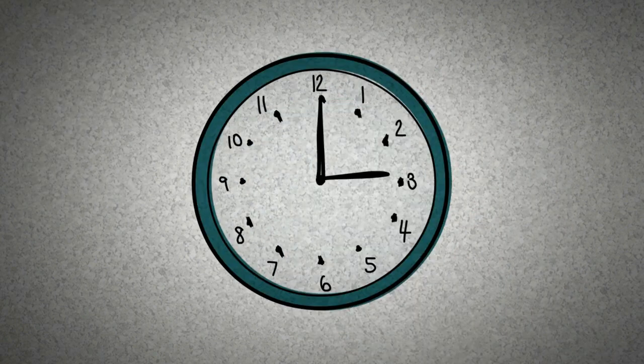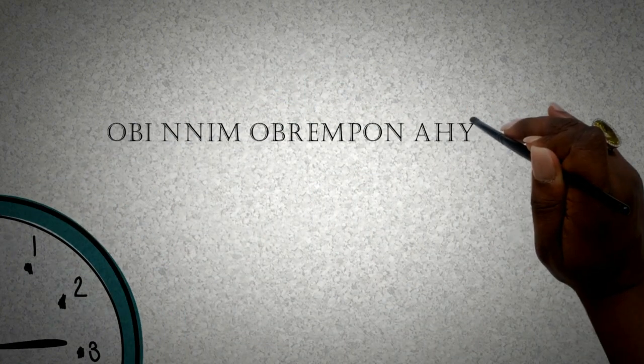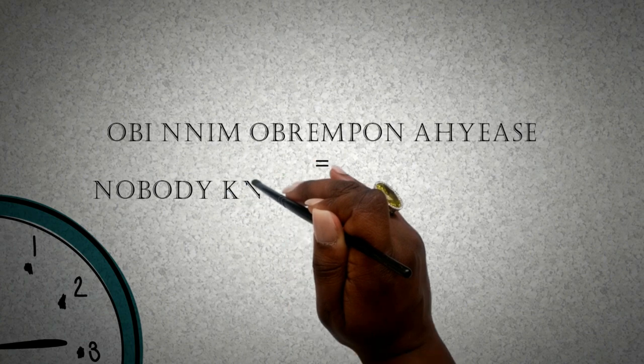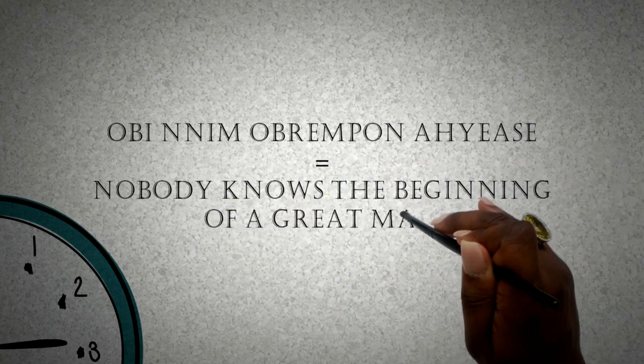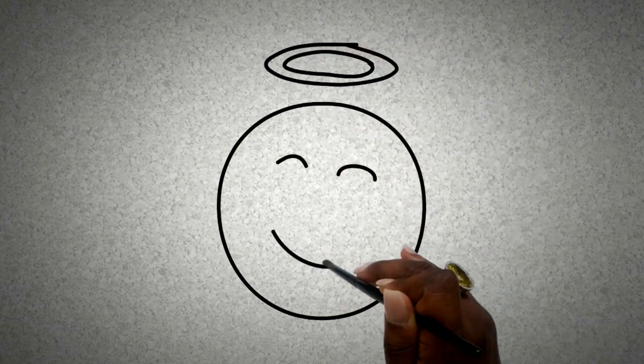Once upon a time there lived in a small village a man called Kweku Anansi. He lived with his wife Konole and their son Entikuma. Now it is said that 'Obi nim opanyin ahyase' which means nobody knows the beginning of a great man.